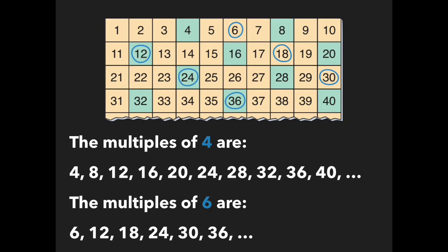I can use a 100s chart to find the multiples of 4 and 6. The multiples of 4 are 4, 8, 12, 16, 20, 24, 28, 32, 36, 40, and so on.